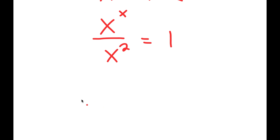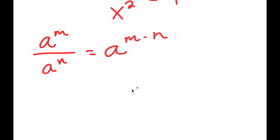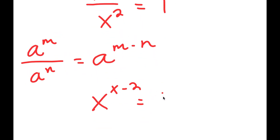Now, if I have something in the form a to the power of m over a to the power of n — make sure to remember this property because it is a very important property of exponents — this is equal to a to the power of m minus n. So x to the power of x over x to the power of 2 is equal to x to the power of x minus 2, and this is equal to 1.